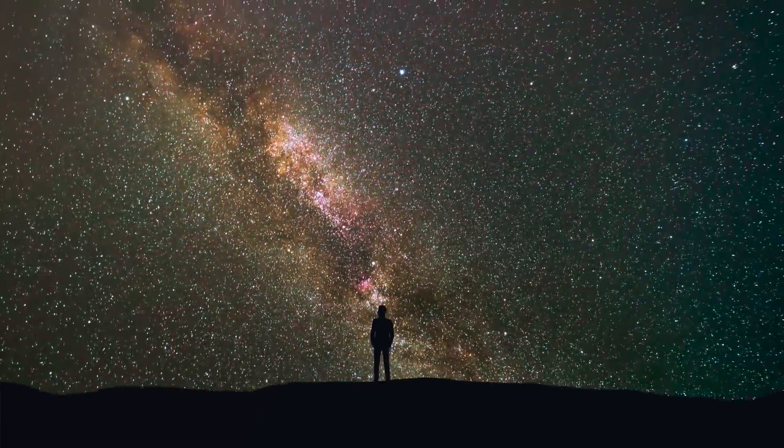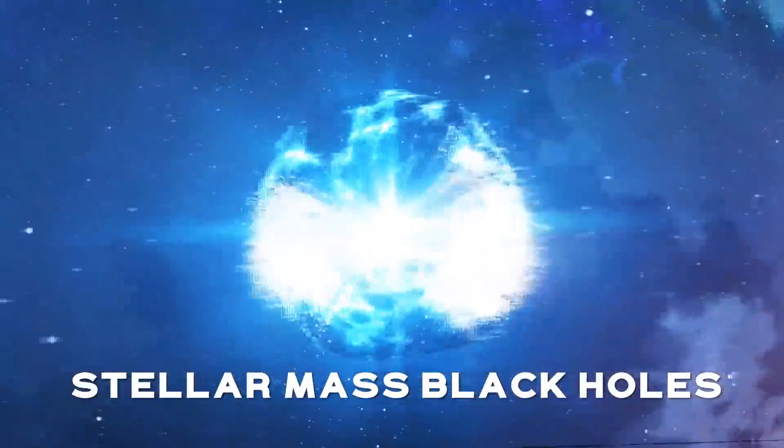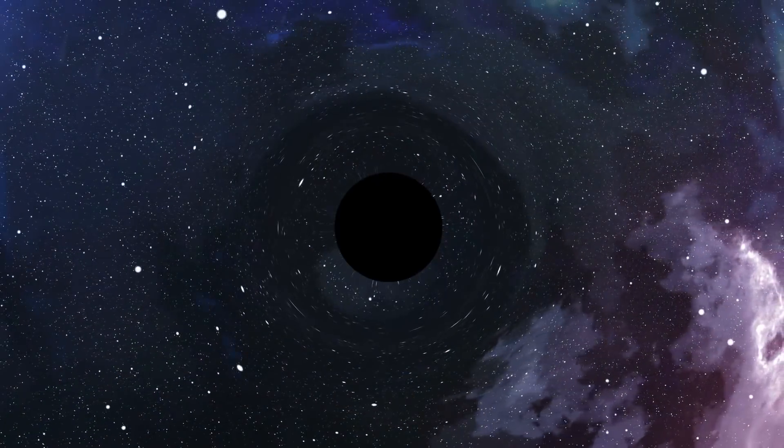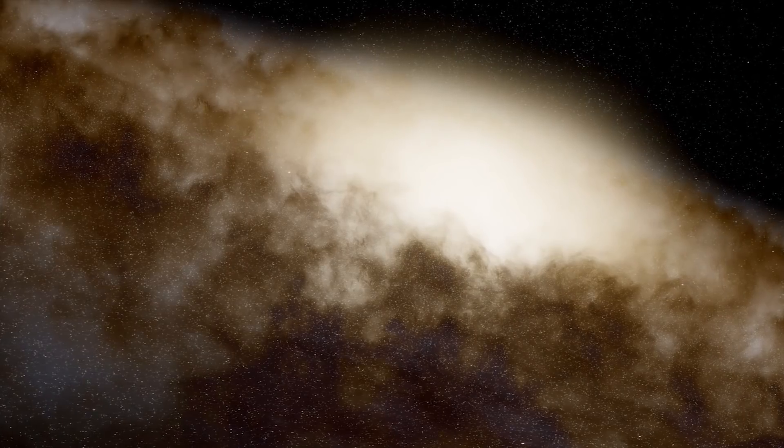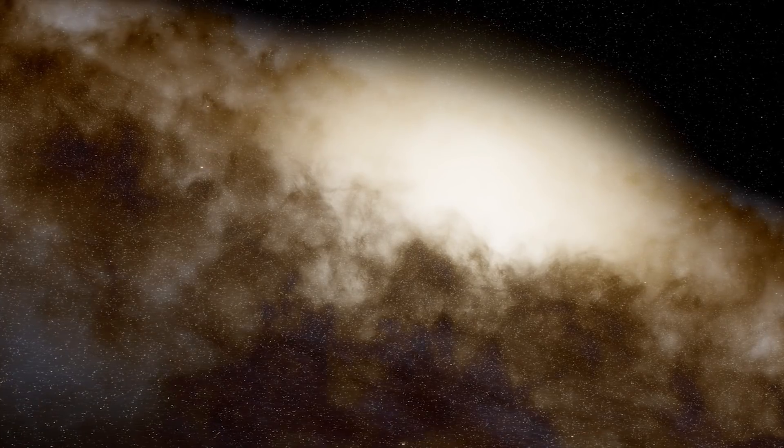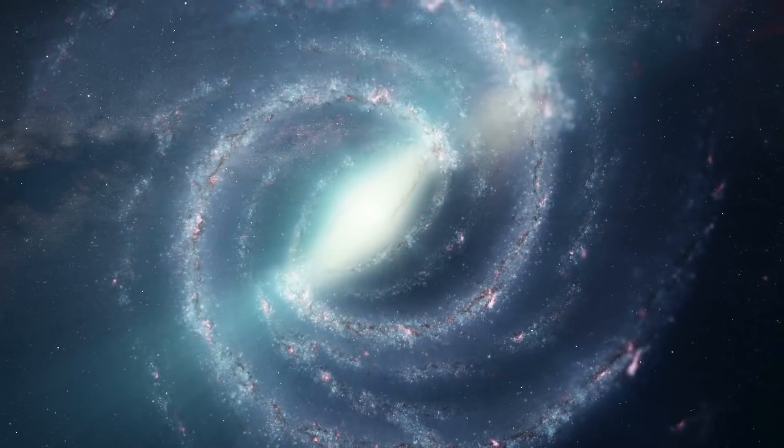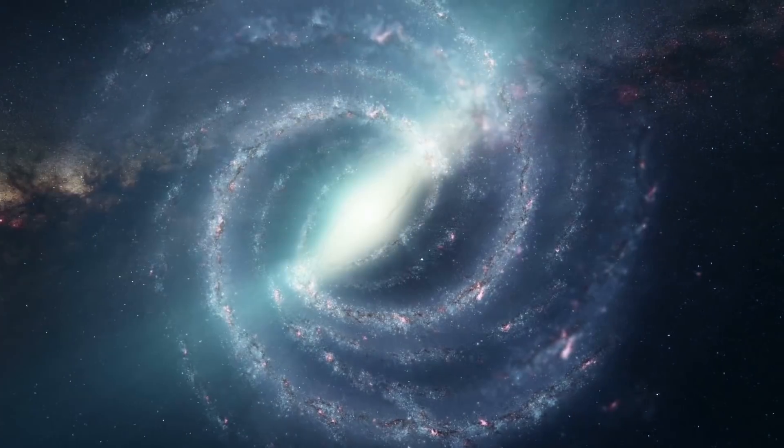Normal black holes, or stellar-mass black holes, form from the collapse of massive stars as their life comes to an end. Every galaxy is full of them, scattered from top to bottom. But supermassive black holes are found only at the very center of a galaxy.